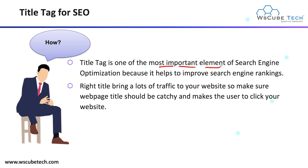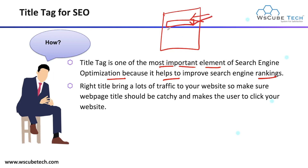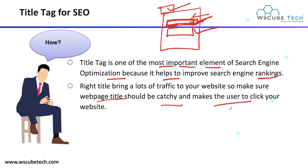The title tag is one of the most important elements of search engine optimization because it helps to improve your search engine ranking. In your search engine result page, if your website is visible, you can see your title and then your meta description. The title tag is what you see on the search engine result page or at the top bar of your web page. The right title brings a lot of traffic to your website, so make sure your title is catchy and makes the user want to click.